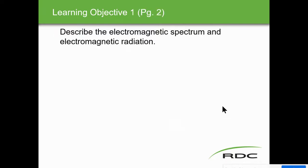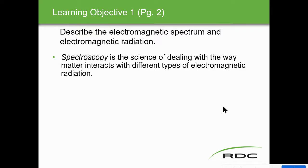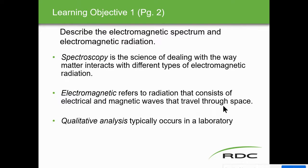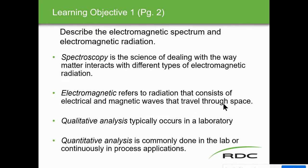Spectroscopy is the science dealing with the way matter interacts with different types of electromagnetic radiation. Electromagnetic radiation consists of electrical and magnetic waves that travel through space. Qualitative analysis typically occurs in the laboratory, while quantitative analysis is commonly done in the lab or continuously in process applications.